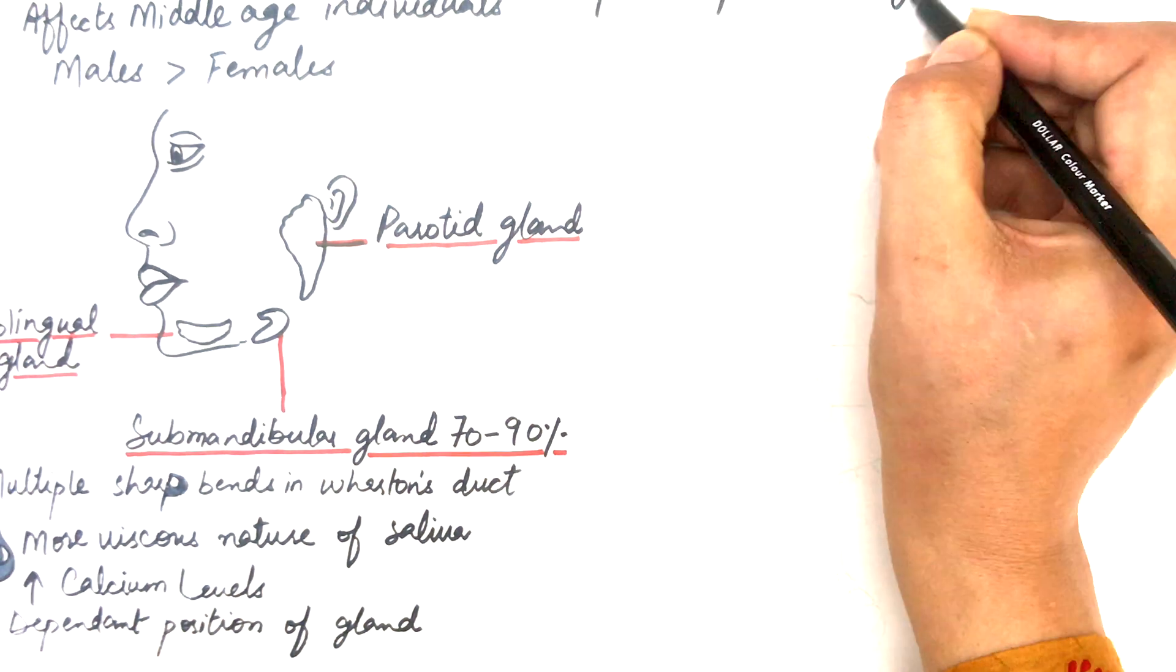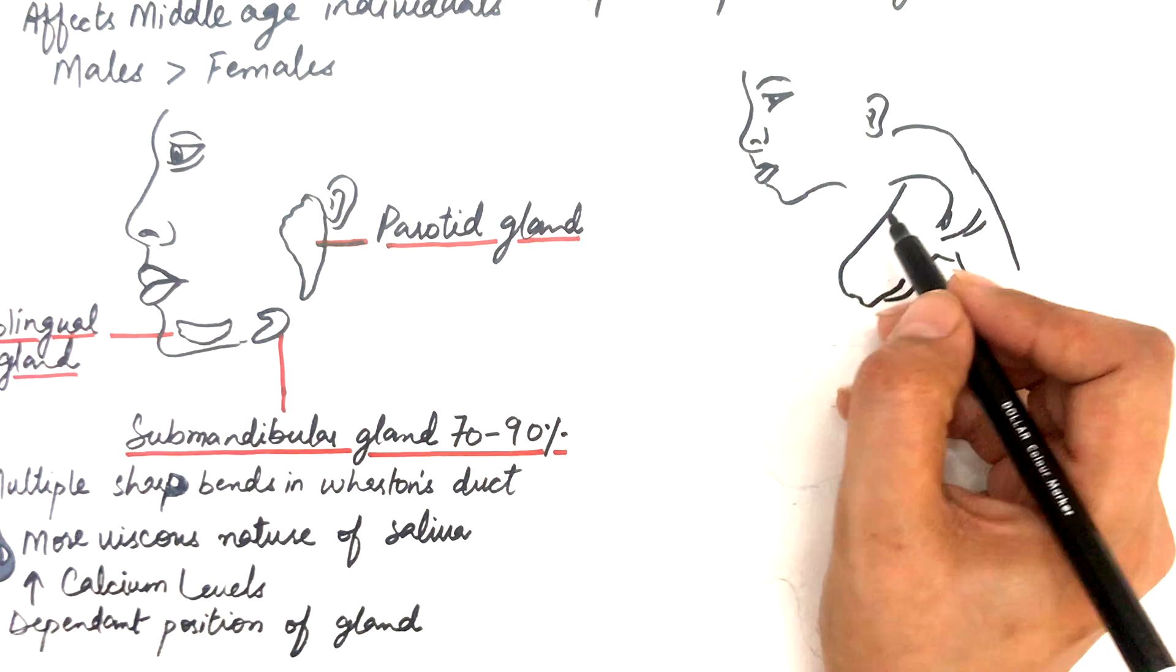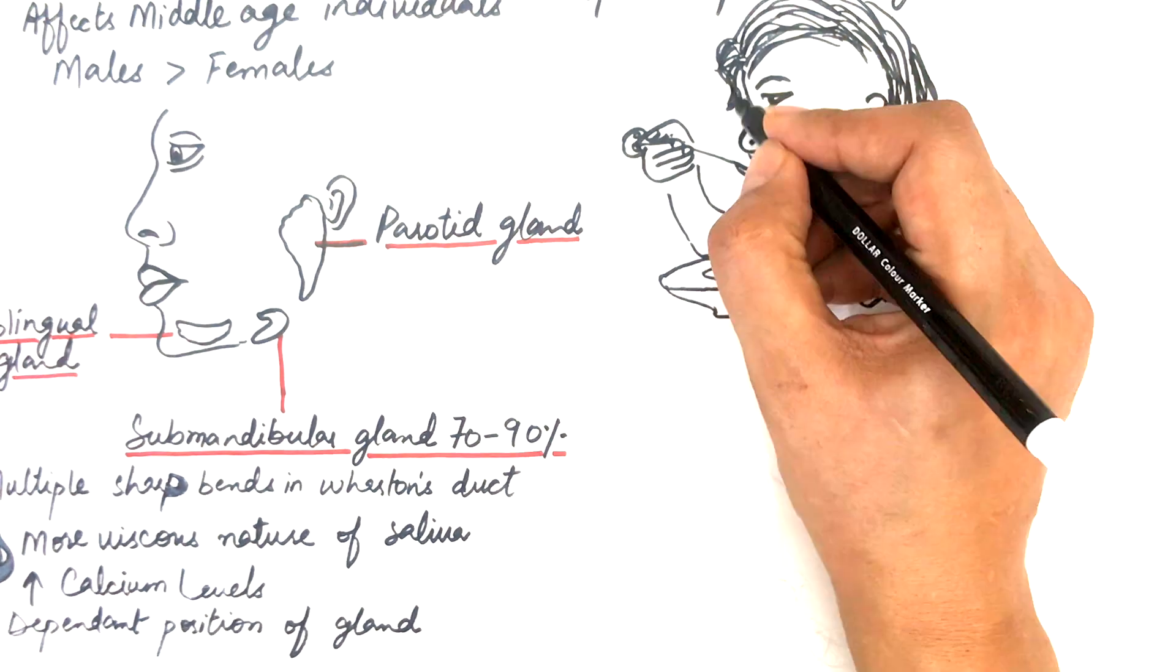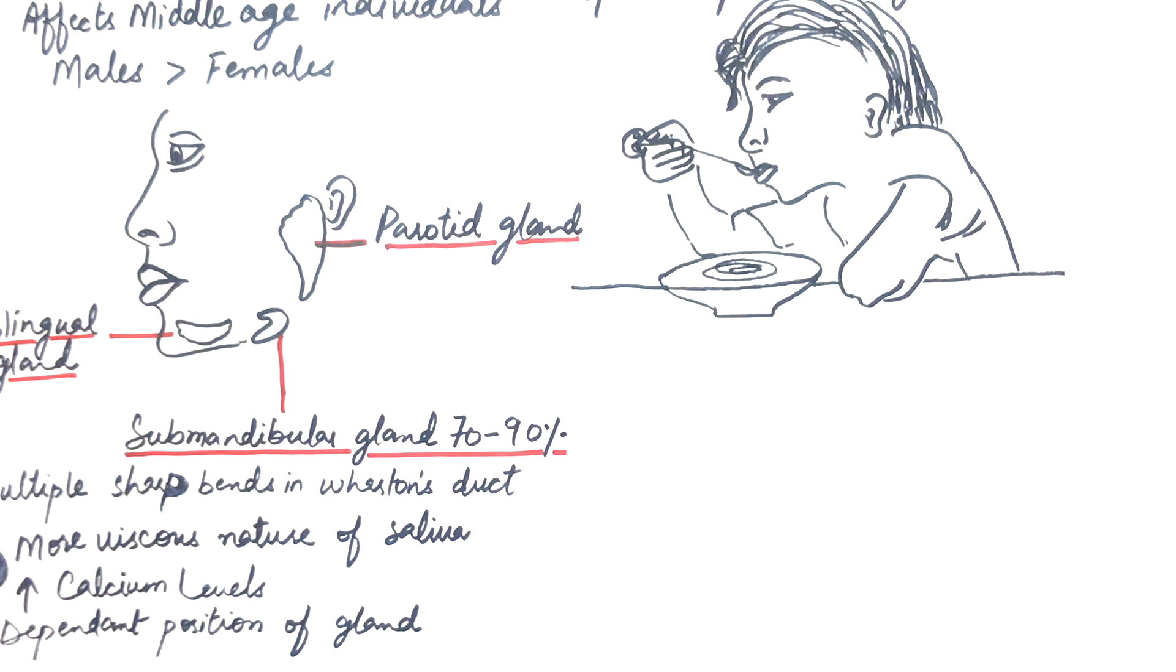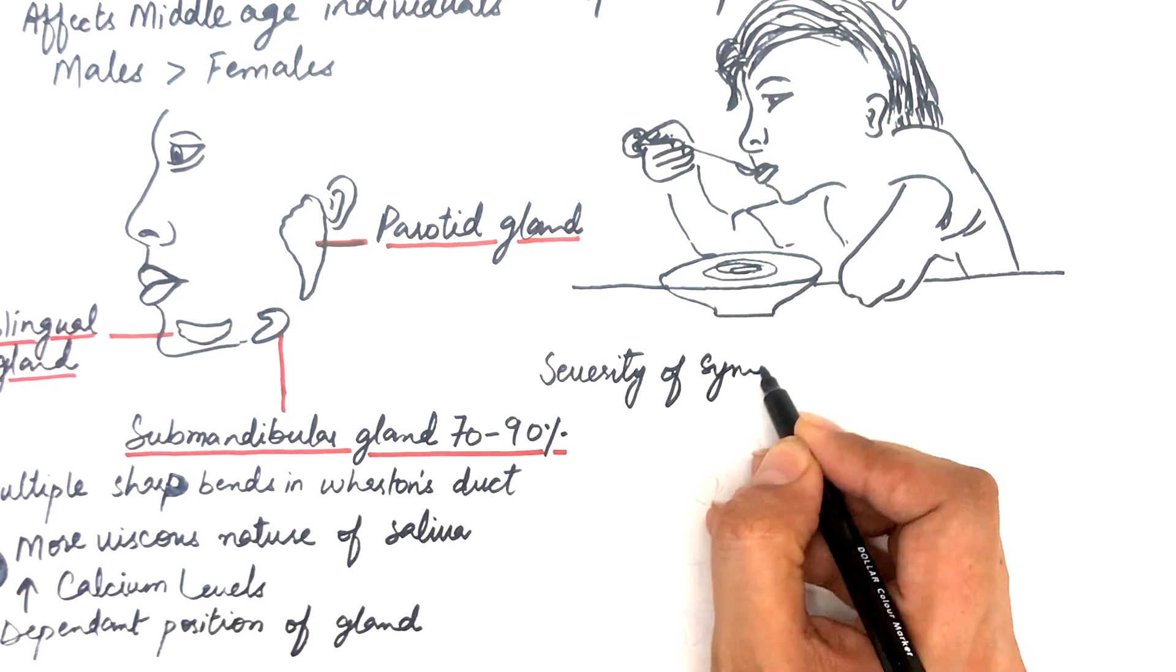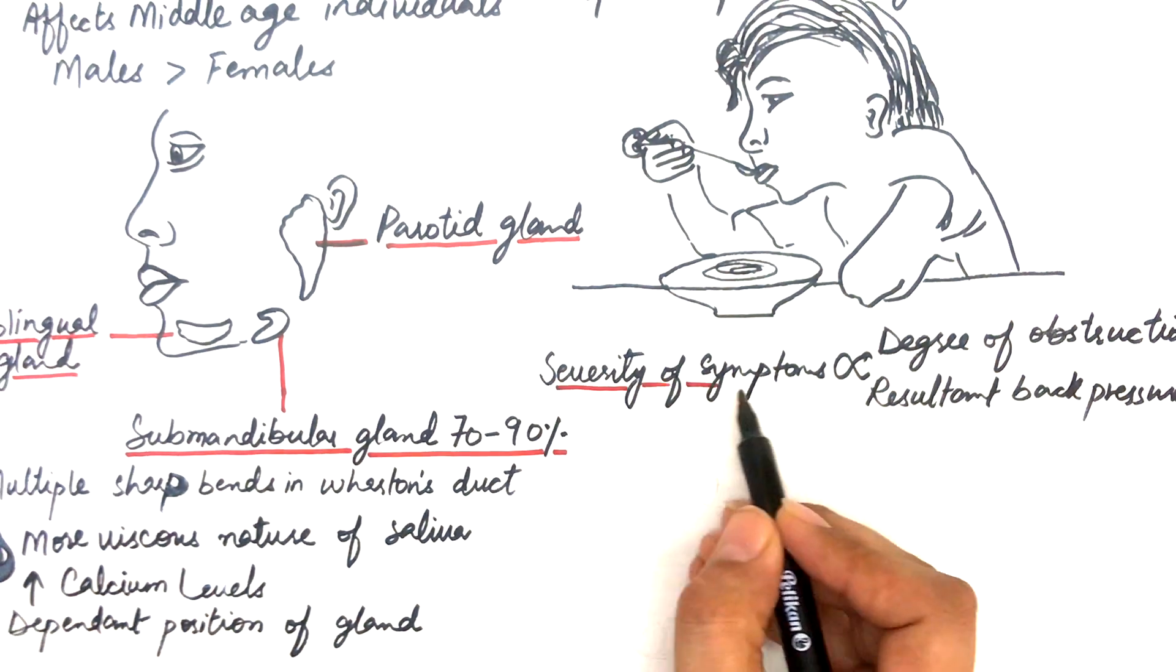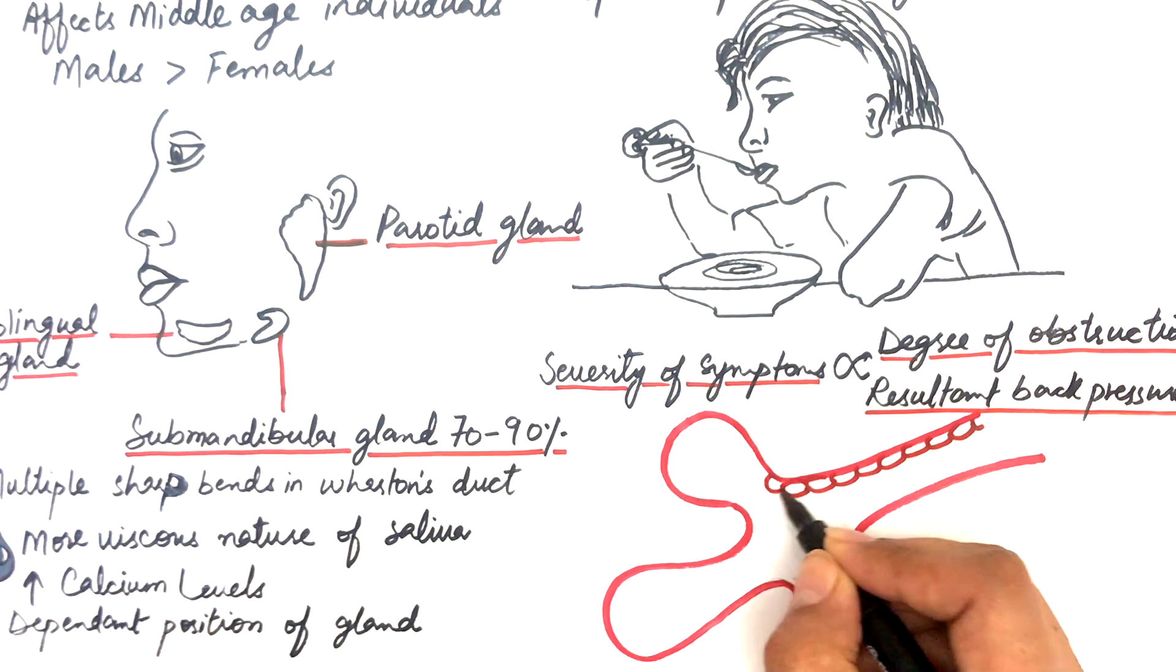In case of symptoms, patients experience episodic pain especially during meal times because there is a sudden increase in saliva secretions when taste and smell of food is experienced. The severity of symptoms is directly proportional to the degree of obstruction of the duct and resultant back pressure produced within the gland resulting from the obstruction.